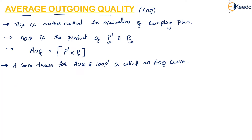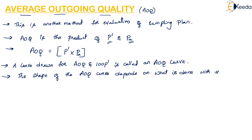The shape of the AOQ curve depends on what is done with the not-accepted lot. If the not-accepted lot is subject to 100% inspection and the defective pieces are replaced by good pieces and returned with a 100% good lot, then such a plan is called an acceptance rectification plan.